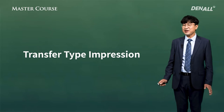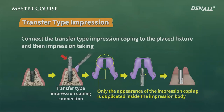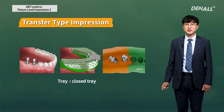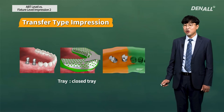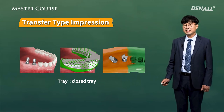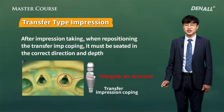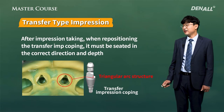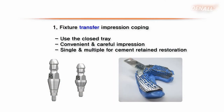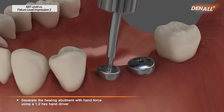Of the fixture-level impression, the one I use most often is the transfer-type impression. The red arrow indicates the transfer impression coping. You might not understand what it is if you see it for the first time, but by seeing the next slides and videos, you will gain more understanding. If you use this type of coping, unlike the pick-up impression coping, you don't have to use a tray with a hole. You can use a closed tray, like any tray you use for taking impression of natural teeth. Let me explain further.